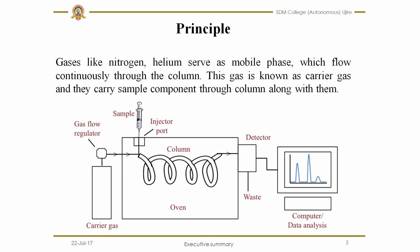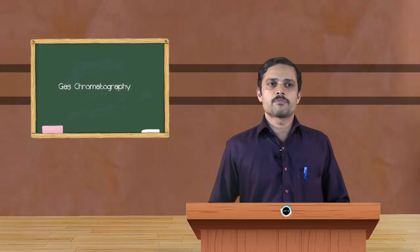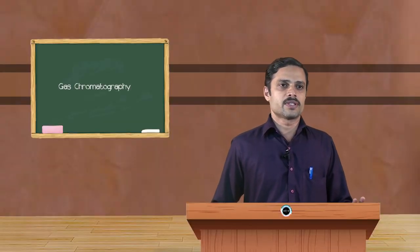It may be flame ionization detector or thermal conductivity detector, and that detects the signal. It will then be processed through a computer or data analyzer where we will get the graph of percentage of abundance against time. First, the carrier gas is started to flow through the oven and oven is preheated to the respected temperature, maybe more than 100, usually 150 degrees Celsius.